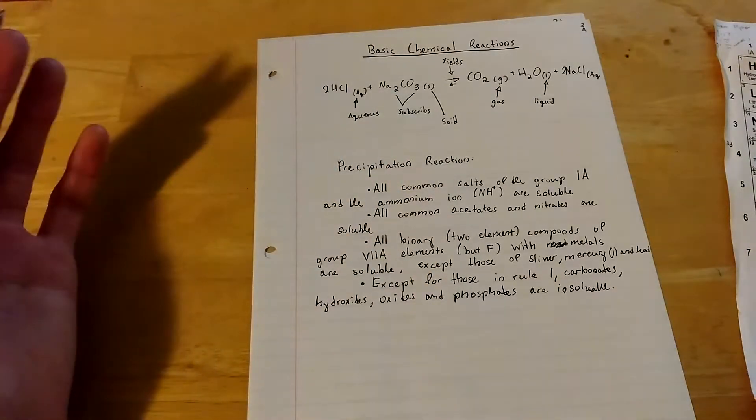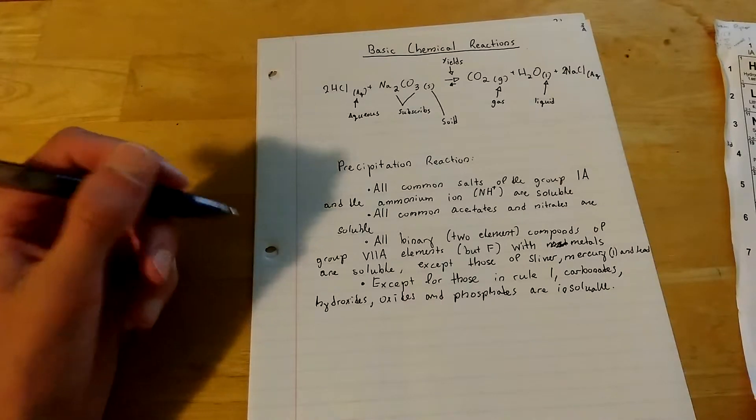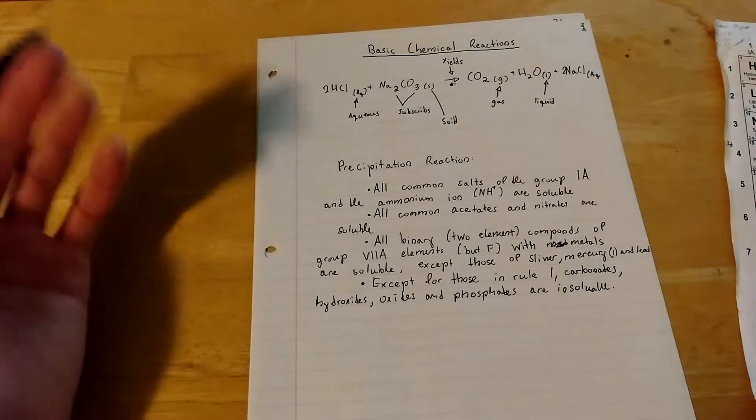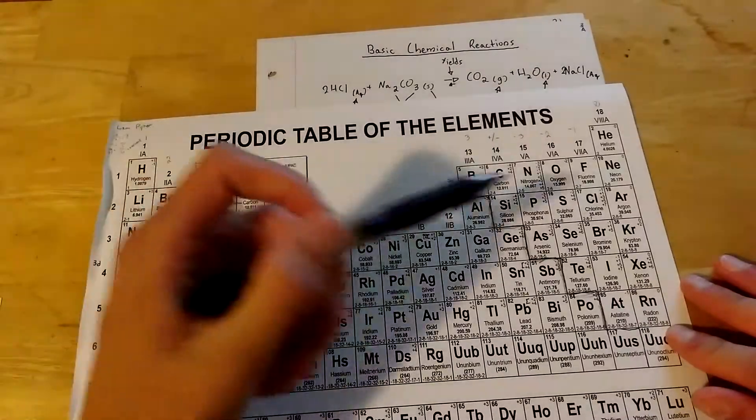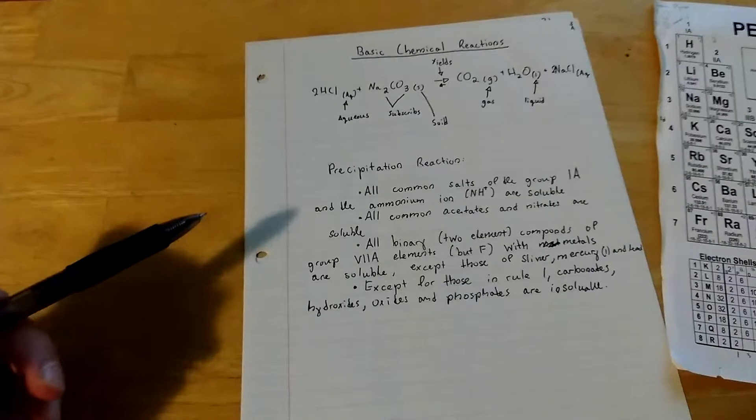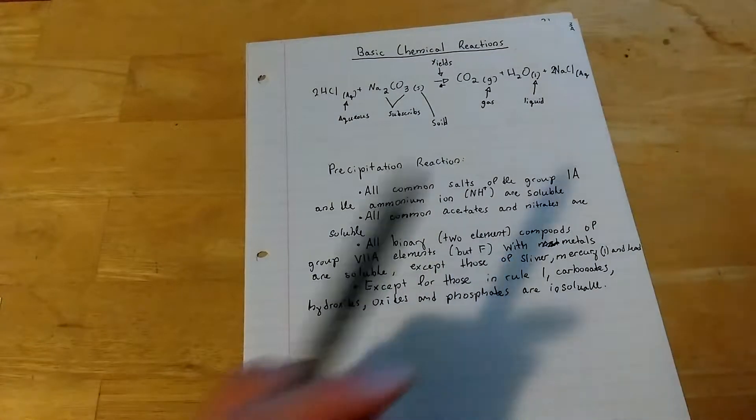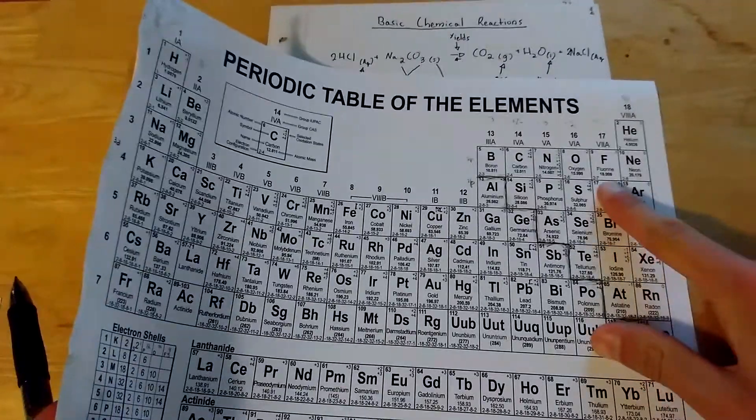All common acetates and nitrates are soluble. All binary or two element compounds of the group 1A, here, not including fluorine, it's different.